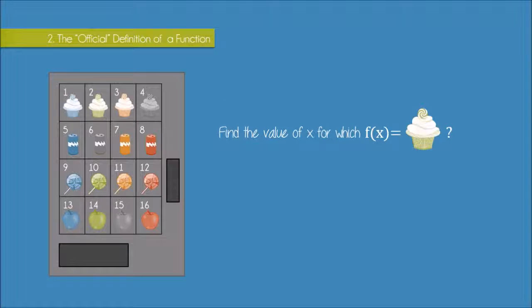Here we have to work backwards. We're being asked to find the value of x for which f of x is equal to the green cupcake. So we're really being asked, what is our input value that will give us an output, which is the green cupcake?